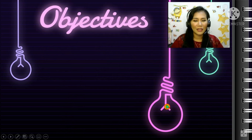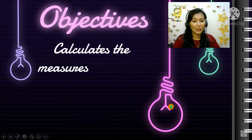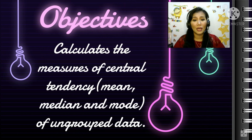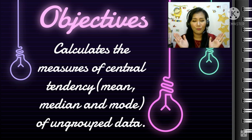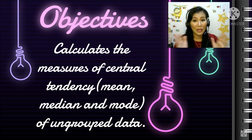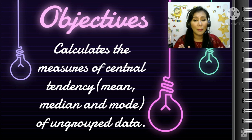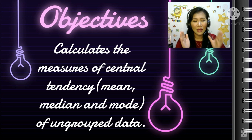The objectives for today's lesson are to calculate the measures of central tendency — computing for the mean, median, and mode based from the raw data. We use these steps whenever we have raw data that is very few. If the number of observations is too many, we use the frequency distribution table to organize our data. But if the raw data is small, this is the simplest way to compute the mean, median, and mode.